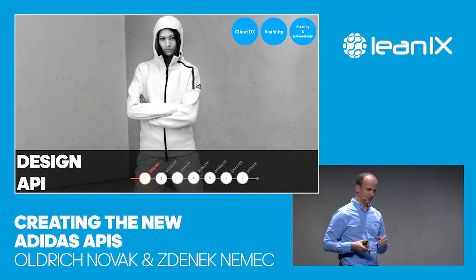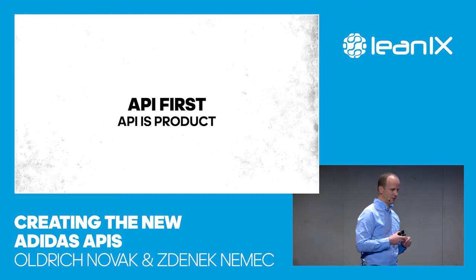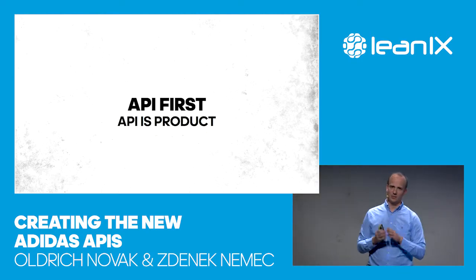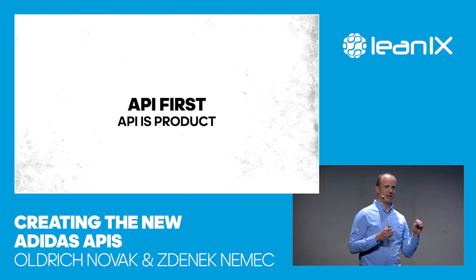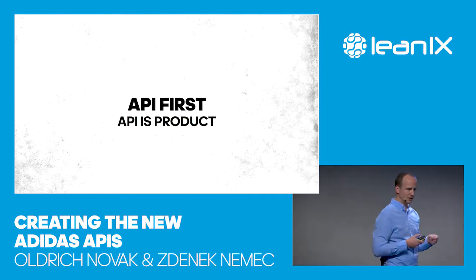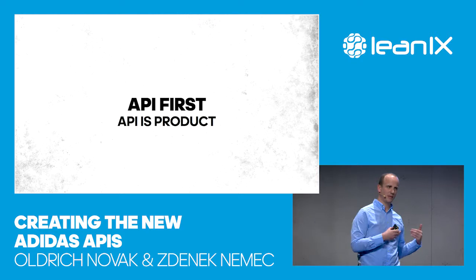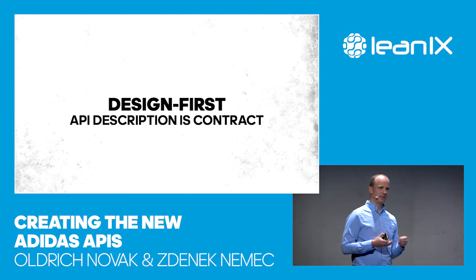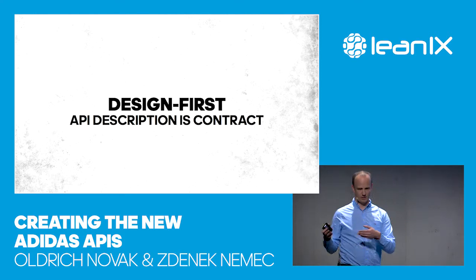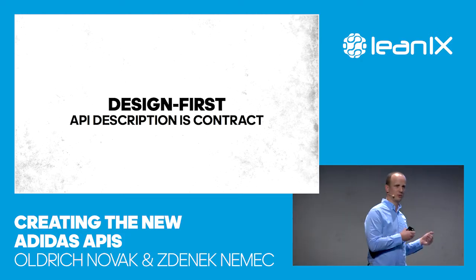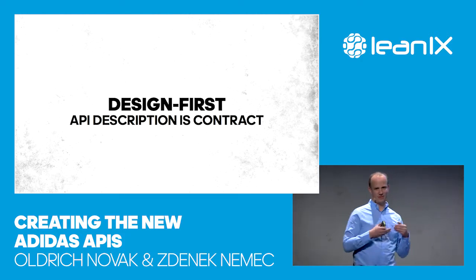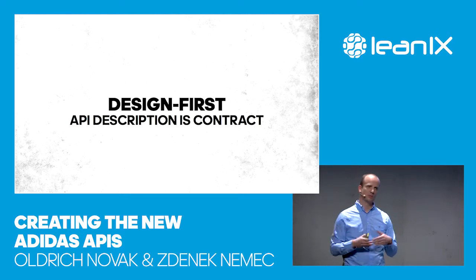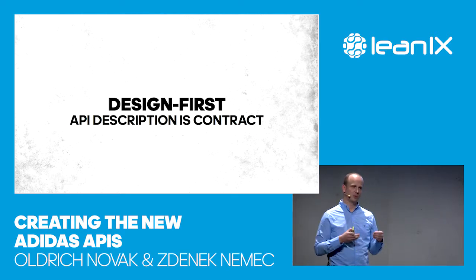Let's walk through each phase. The first and most important thing: think of an API as a product. Think API first. An API is a product and it should mirror the business objectives of the company. With that, it must have a product owner. As with every other product, you don't start with development — you start with the design. You design an API first, discuss it with stakeholders, with people who are going to consume it and people who are going to implement it. Once the design is approved, it becomes the contract.